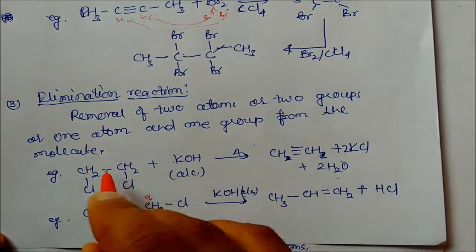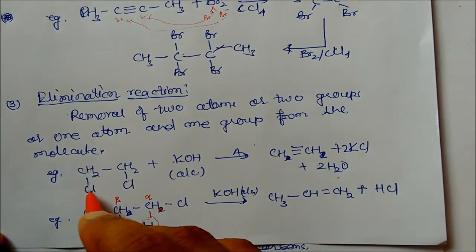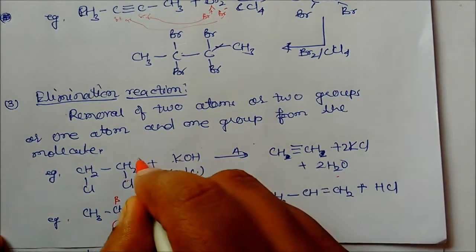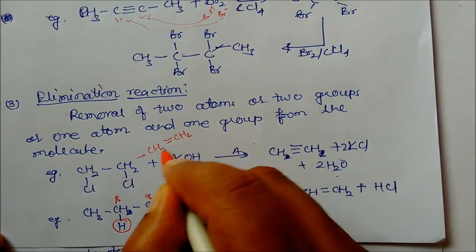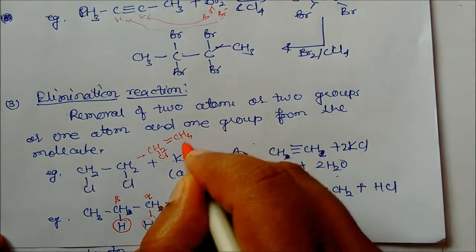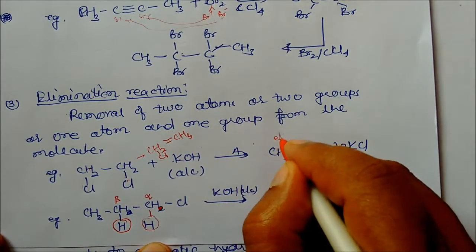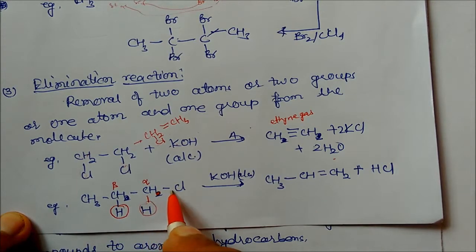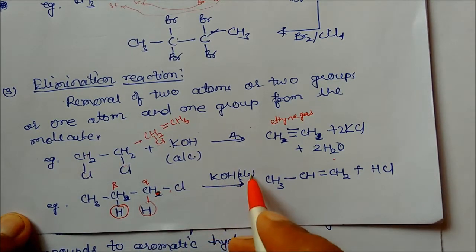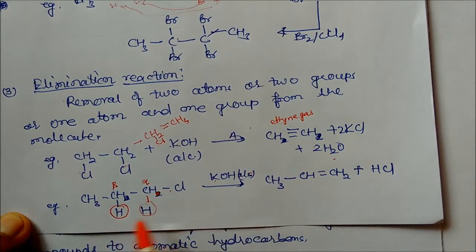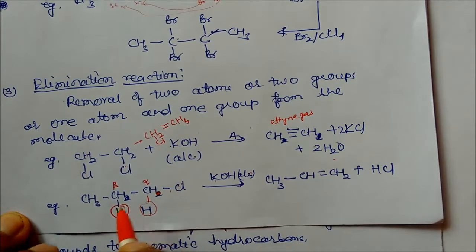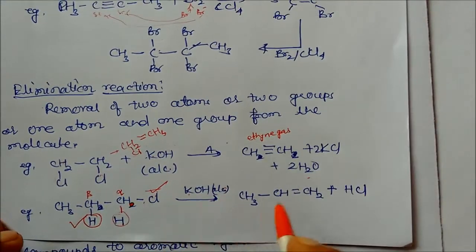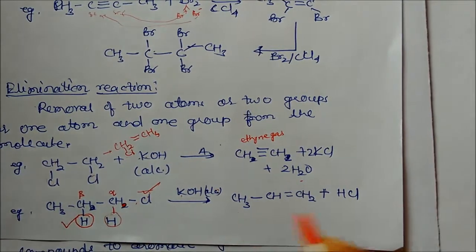Hydrogen and OH form water; Cl and K form KCl. On heating again, another Cl and CH come out. The compound first converts to a single bond, then a double bond, then a triple bond structure. Another example: CH3-CHCl-CH3 with alcoholic KOH — potassium takes one Cl, and OH takes one hydrogen from the adjacent carbon. So we get CH3-CH=CH2 plus KCl. This is elimination — KCl is eliminated from the molecule.